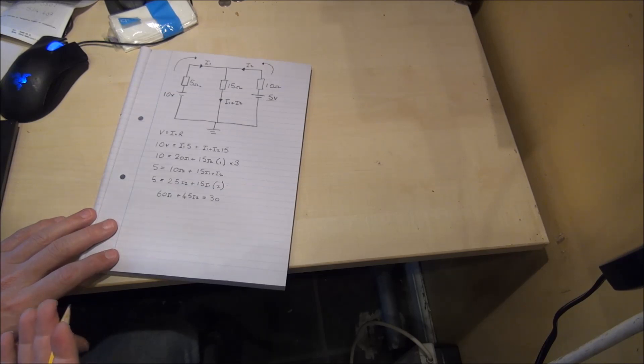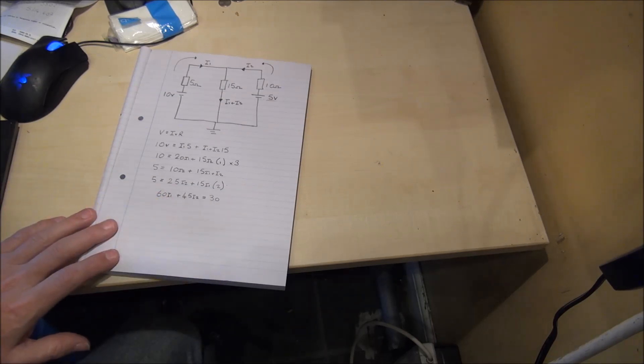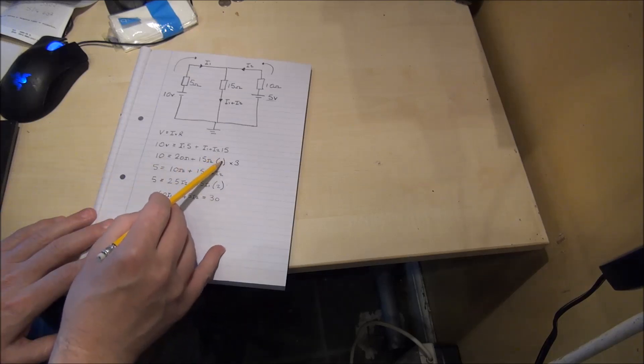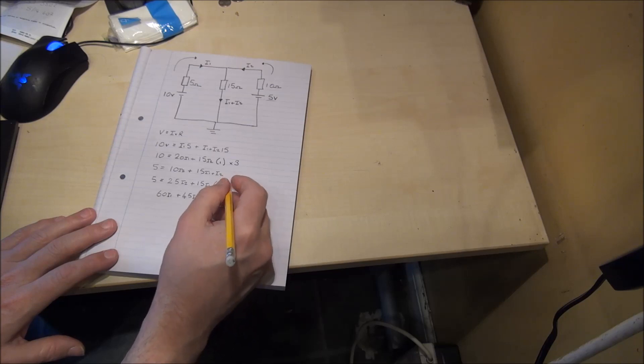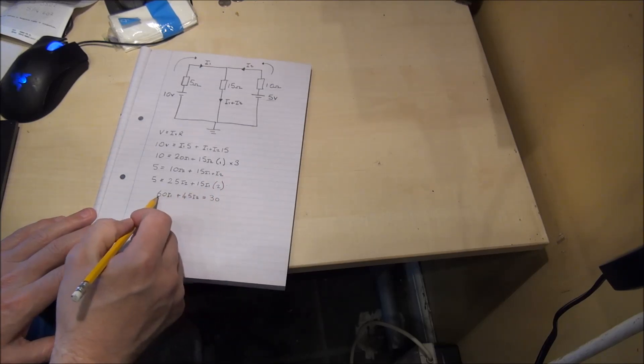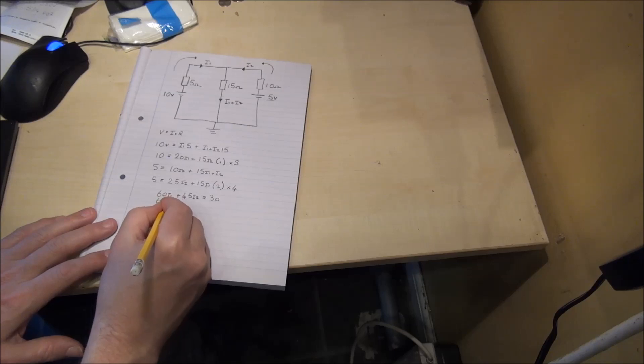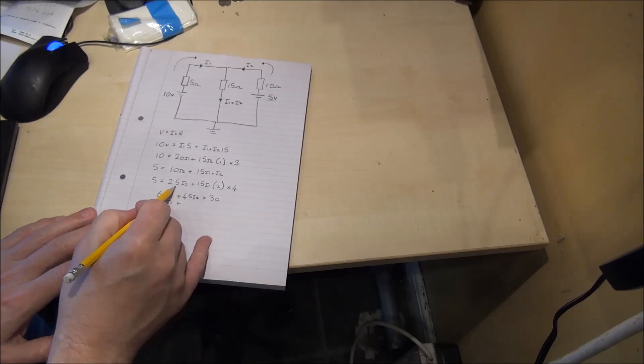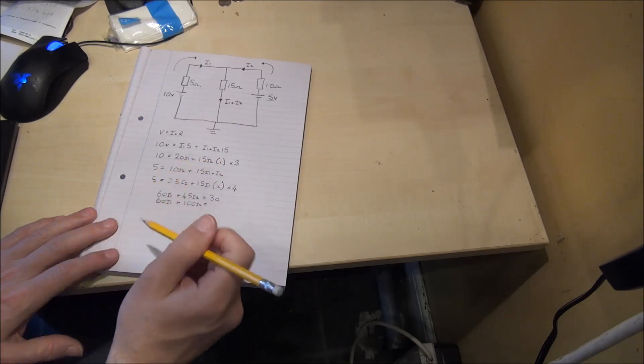The point of simultaneous equations is you try to make one of the terms on the left hand side equal for both the first and second equation. Taking the second equation we can make 15 I1 equal 60 I1 by multiplying it by 4. 60 I1 plus 4 times 25 I2 which is 100 I2 and 4 times 5 is 20.